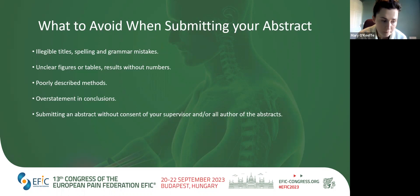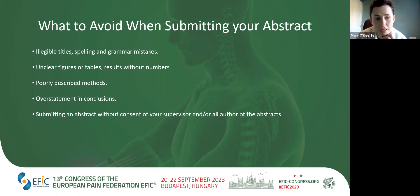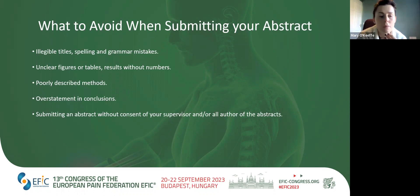Poorly described methods: the methods are the most important part of the abstract because they tell your reader how good the study is and how much they can believe your results. Really focus on explaining the methods — one helpful approach is the PICO strategy: population, intervention or exposure, comparison, outcomes, and method of analysis. Reading other abstracts from the European Journal of Pain will give you a feel for what a good methods description looks like.